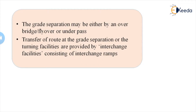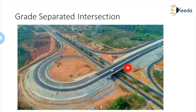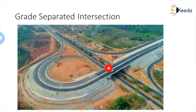If we have to go from the lower level road to the upper road, ramps are connected from the lower road to the upper road. I will show you one figure. This is one grade separated intersection — you can see one road which is under the other road. This type of connection is called the interchanging ramp. The connecting links between the two roads is called the ramp.